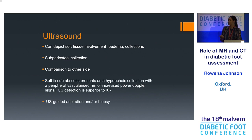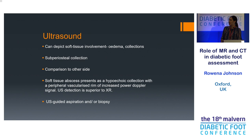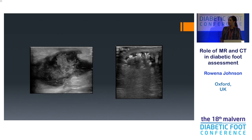Soft tissue abscesses present on ultrasound as a hypoechoic — meaning dark — collection with a peripheral vascularized rim of increased activity, which is part of the inflammation. Ultrasound is definitely superior to x-ray for this, and it also allows us, if needed, to perform an aspiration and/or biopsy.